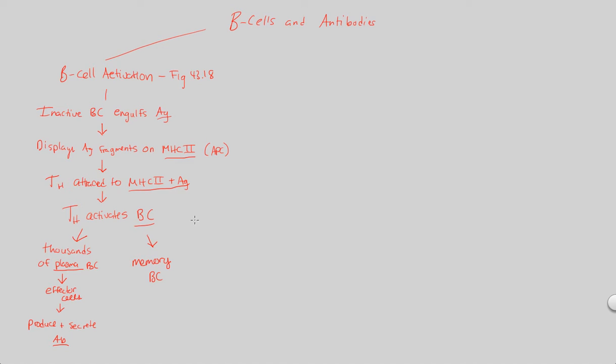That's B-cell activation. Take a look at figure 43.18. Now it's important to recognize how this will work. B-cells don't actively go out and kill things. They just secrete antibodies. So it's worth understanding how an antibody functions.